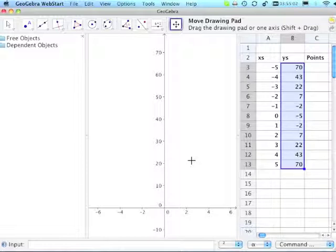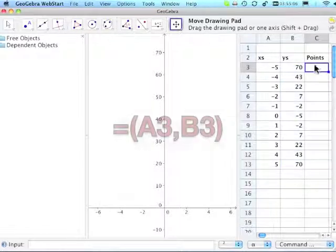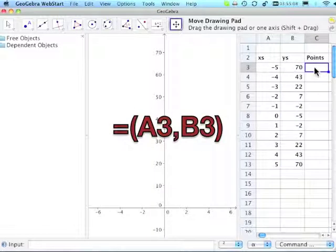And so now what we're going to do is create points off of column C, and the points are simply going to be starting with an equal sign, opening parentheses, clicking on the X value, comma, clicking on the Y value and closing my parentheses.